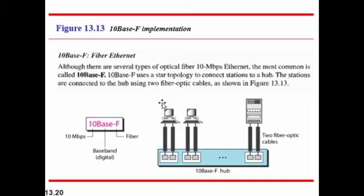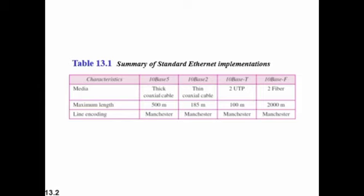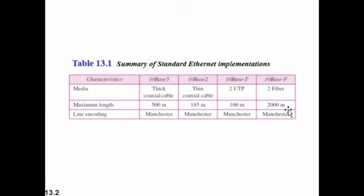Summary of Standard Ethernet implementations: 10Base5 uses thick coaxial cable (max 500m); 10Base2 uses thin coaxial cable (max 185m); 10BaseT uses two UTP cables (max 100m); 10BaseF uses two fiber optic cables (max 2000m — the longest because fiber optics have very high strength). All four standards use Manchester line coding.